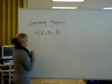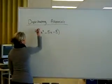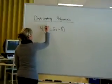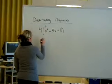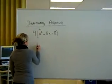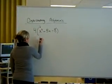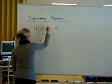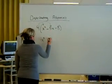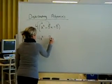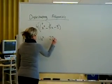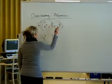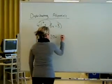We're going to distribute this polynomial. The first thing is 4 times x squared, you get 4x squared. 4 times 5x, you get 20x. And 4 times 8 is 32.